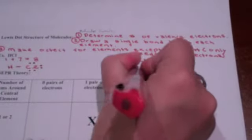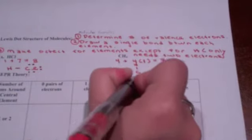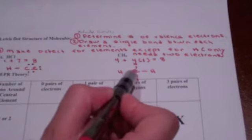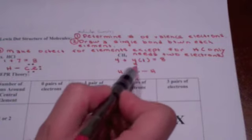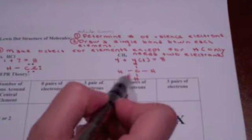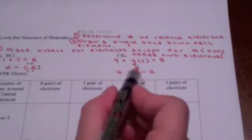Let's do step two. I'm going to draw carbon bound to my four hydrogens — one hydrogen here, one hydrogen here, one hydrogen here, and one hydrogen here. Each line represents two valence electrons that are being shared, so here are two, four, six, eight electrons. Carbon's happy, and the hydrogens are happy because they only need two. I've used all eight valence electrons: two, four, six, eight. Done.